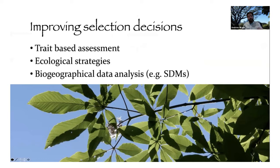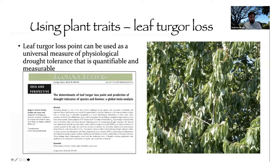How do we improve selection decisions? Using a trait-based assessment is quite helpful — understanding ecological strategies and, more recently, looking at biogeographical data analysis using species distribution models. The first trait I'd like to bring to your attention is the leaf turgor loss point. This is something I've been investigating for a number of years — most recently doing work with Jake Miesbauer at the Morton Arboretum on the elm collection there. The turgor loss point can be used as a physiological measurement of drought tolerance that is quantifiable.